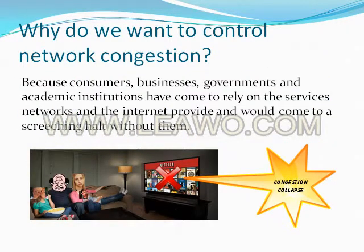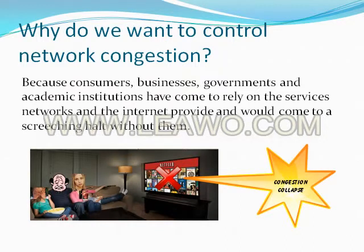We want to control network congestion because consumers, businesses, governments, and academic institutions have come to rely on the services networks and the internet provide and would come to a screeching halt without them. While losing Netflix would not be catastrophic, the true implications of a full or more likely partial network collapse would be both far-reaching and catastrophic — just think of banking: you could lose access to or lose track of your money.